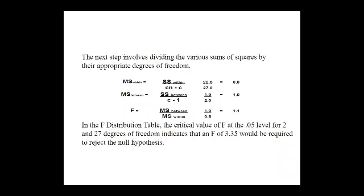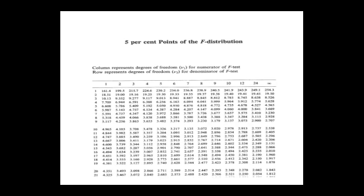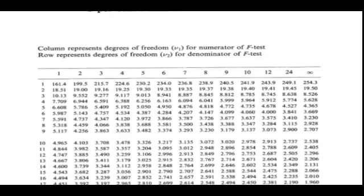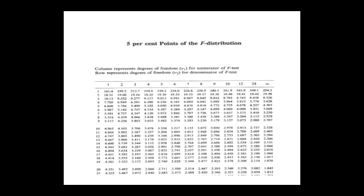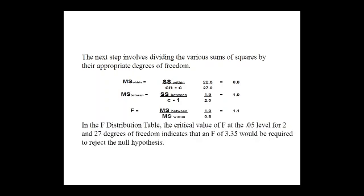The F-ratio formula is MS between divided by MS within, which is 1 divided by 0.8, giving a value of 1.1. In the F distribution table, the critical value of F at the 0.05 level with 2 and 27 degrees of freedom is 3.35, which would be required to reject the null hypothesis.